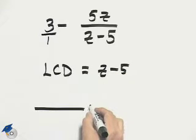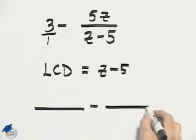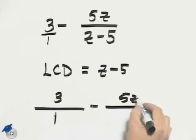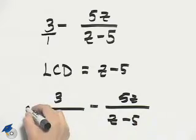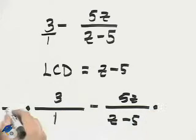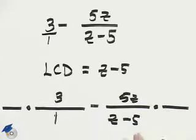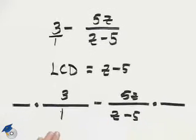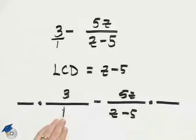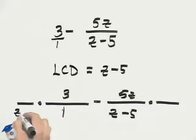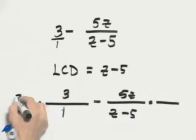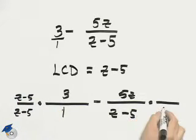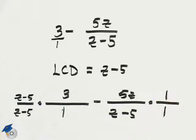We will use that information to help us rewrite these fractions appropriately. So we will multiply by some form of 1 to help us get a denominator of z minus 5 for each fraction. To get a denominator of z minus 5 in this first fraction, we need to multiply by z minus 5, so we will do so in the numerator as well. We already have z minus 5 here, so we'll multiply by 1 over 1.